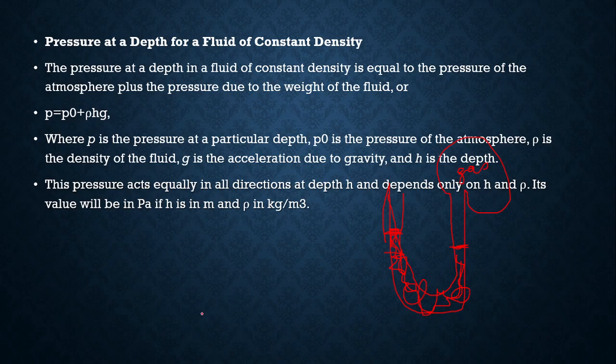There's an atmospheric pressure with some density of air and some height of air multiplied by g above the water. So instead of calculating all this, we just have a set value for atmospheric pressure and we use it and add it to the other calculation.